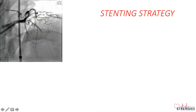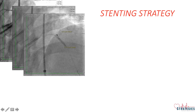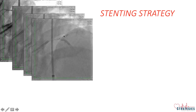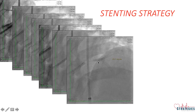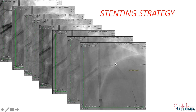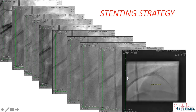We took a 2.75 by 28 mm stent to LAD with a balloon in diagonal. After deployment we crushed the stent, then recrossed it and recrossed the LAD stent, and optimized with 2.75 NC, then did kissing as part of the DK-Crush strategy. Then I took a 3 by 20 mm stent and deployed from LAD to diagonal, then did a POT with a 4 by 8 mm balloon. Then we recrossed into LAD and did kissing optimization with 2.75 by 15 in LAD and 3 by 15 into diagonal, and then did a re-POT with a 4 by 8 mm balloon in proximal LAD.